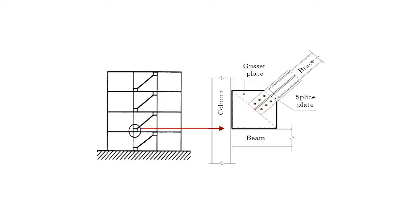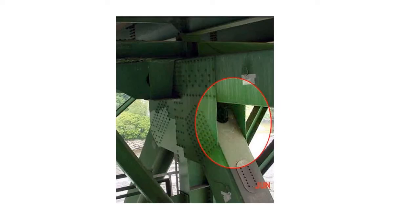To carry the lateral load in any structure we need to use bracing. To connect this bracing with the beam as well as with the column, we need to use the gusset plate. In many cases we simply neglect the design aspect of this gusset plate, as a result of which the gusset plate buckles — as you can see in this picture, this particular portion of the plate has buckled. In this video I will discuss how to design, or what factors you need to consider when designing this gusset plate.